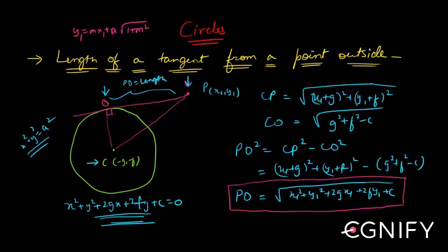Of the circle: minus g comma minus f. We've already seen that. So you have CO which is the radius. CO, this is your radius, and the formula for this is under root g square plus f square minus c. We've seen this as well.